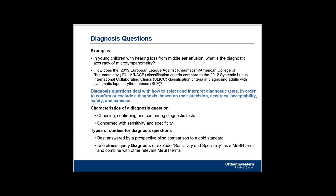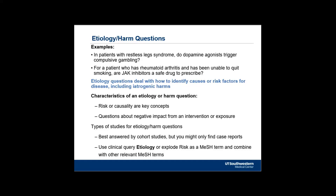Etiology or harm questions are best answered by cohort studies, but you might only find case reports. You can't have clinical trials for these types of questions because it would be unethical — you wouldn't get approval if you wanted to tell one group of people to smoke two packs of cigarettes a day and another group to be your control. So with these, you need cohort studies or case series reports from people who have already had various health issues. Risk and causality are key concepts for this one.